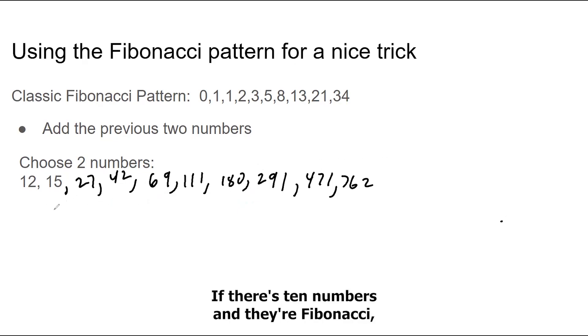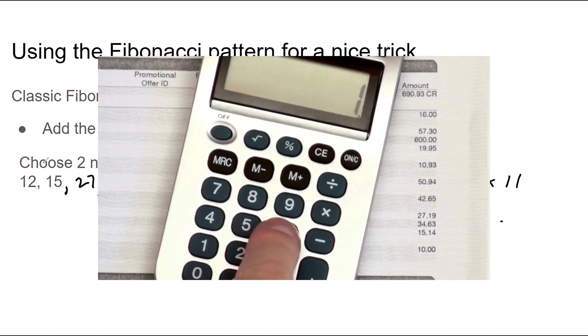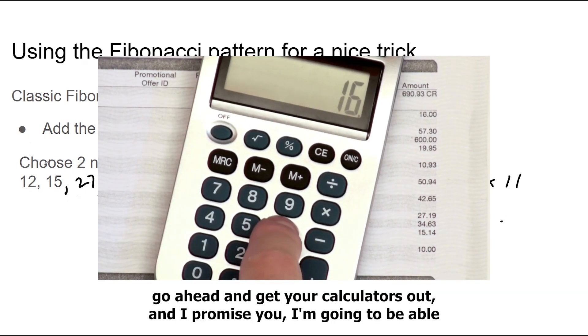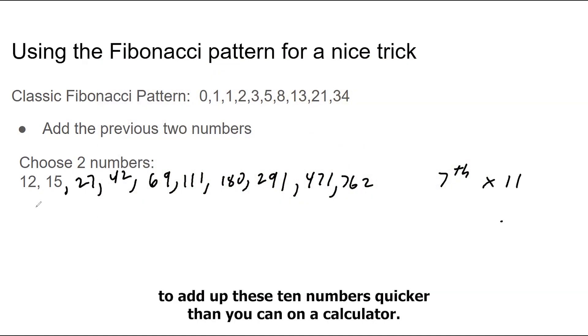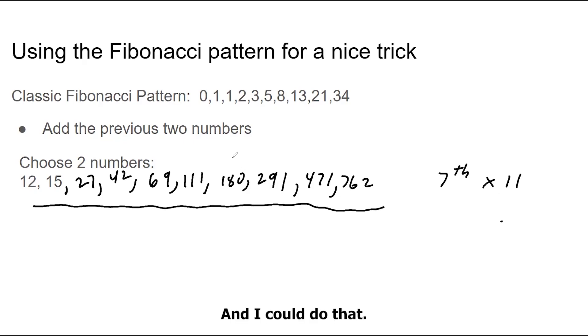If there's 10 numbers and they're Fibonacci, you take the seventh number and you multiply it by 11. So I tell the kids, go ahead and get your calculators out, and I promise you I'm going to be able to add up these 10 numbers quicker than you can on a calculator. And I go through the theatrics of how smart I am and how bad their calculators are, blah, blah, blah. Anyways, just kind of ham it out for them. And so that's, okay, on your mark, get set, go.